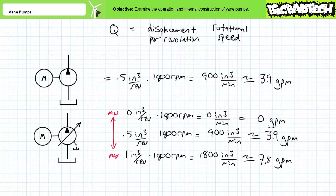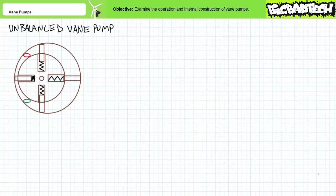Vane pumps, in addition to being categorized as fixed or variable displacement, can either be unbalanced or balanced. We'll examine both configurations, starting with the unbalanced vane pump since it's the easiest. An unbalanced vane pump features an off-center rotor that spins inside a cam ring. The rotor has slots cut into it, into which vanes slide in and out of.